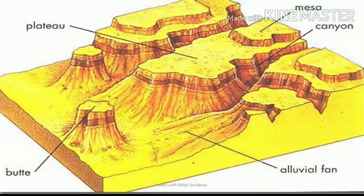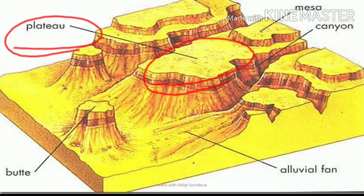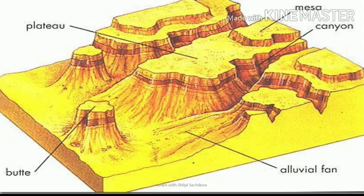A highland area with a flat top is called a plateau. Plateaus have large summit areas that rise above the surrounding regions, so it is also known as stable land. Plateaus can be broadly classified into three types: inter-mountain plateaus, continental plateaus, and lava plateaus.